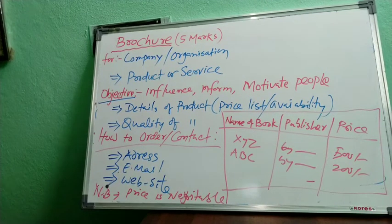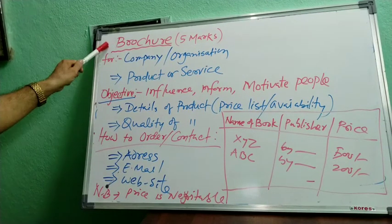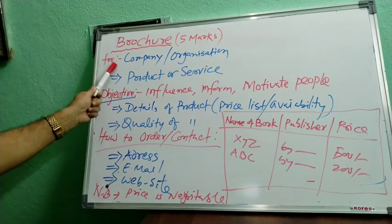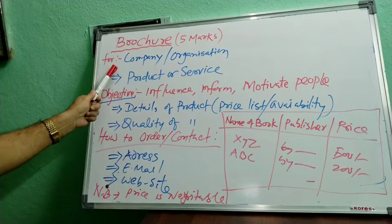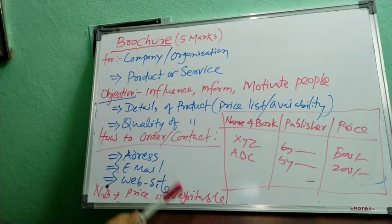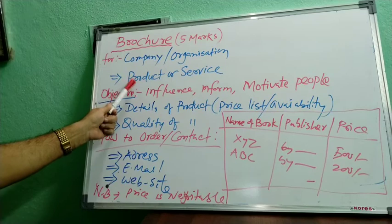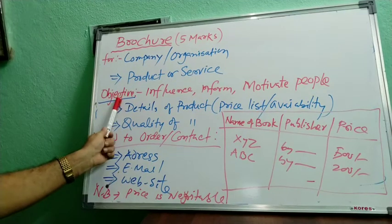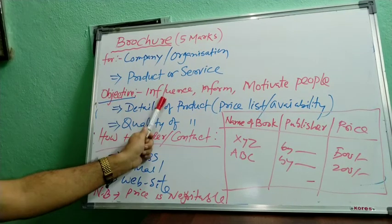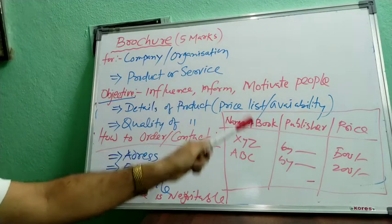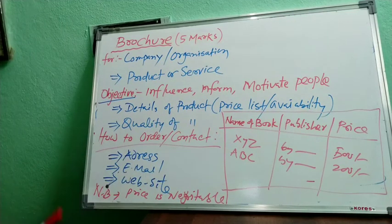Yes, I hope it is visible to you. Now look at this. Voucher — 5 marks comes in your examination. For a company or for an organization, it is giving information about the product or the service. The objective is to influence, to inform, to motivate people to buy the product or the service.